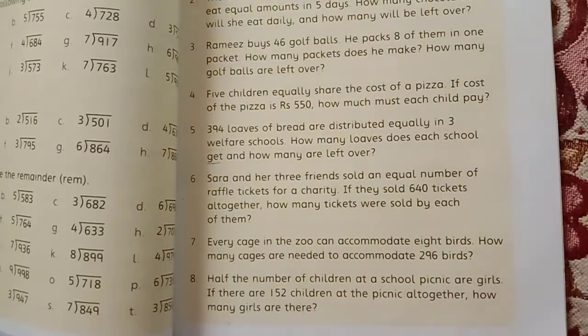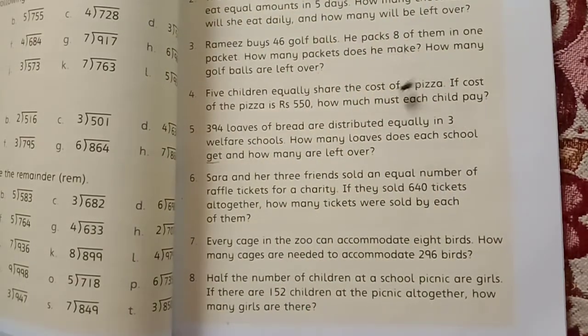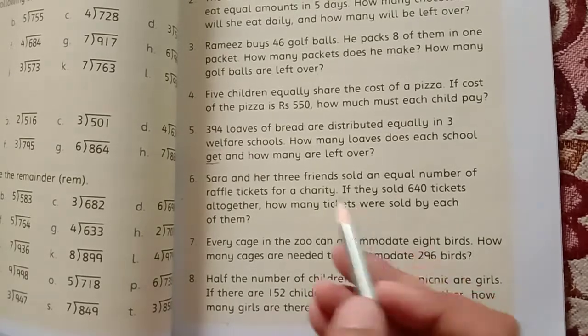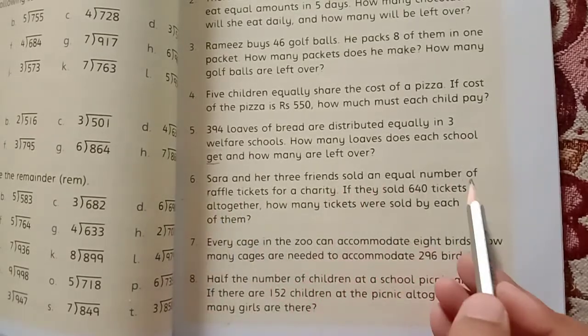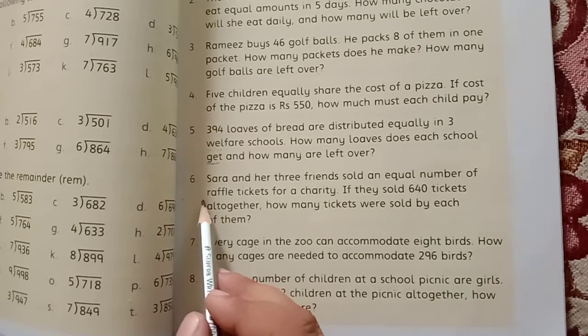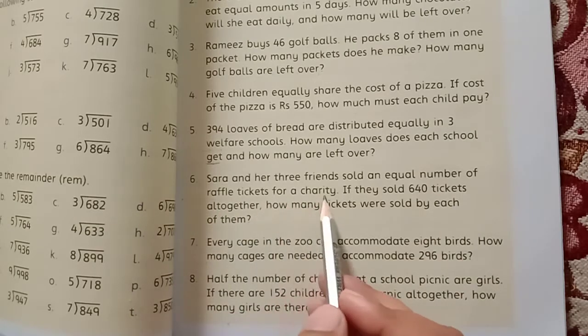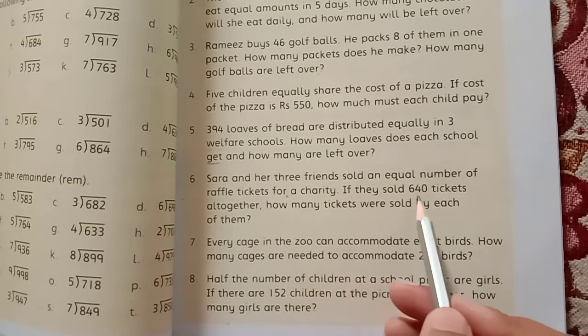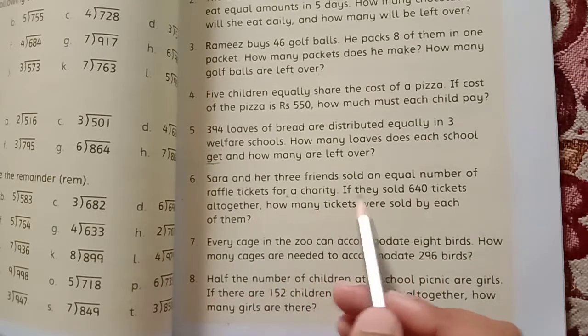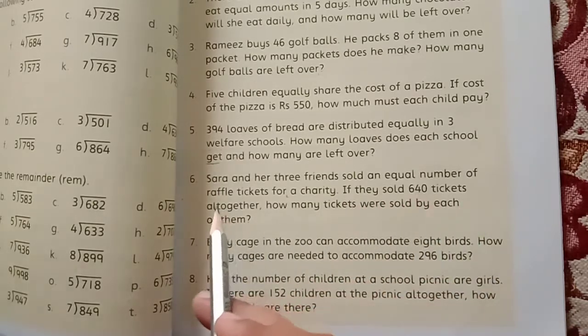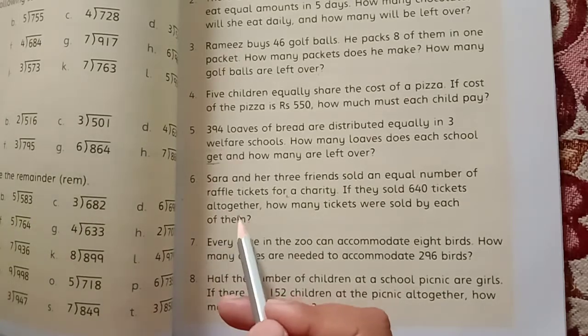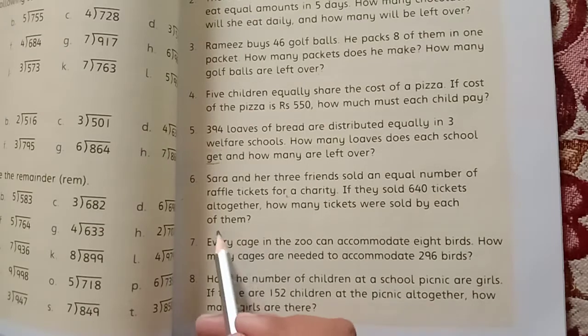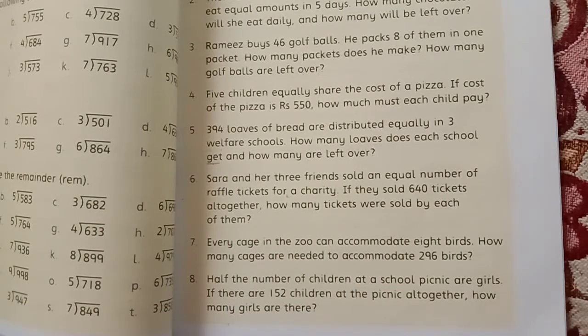Question number 6: Sara and her three friends sold an equal number of raffle tickets for charity. They sold 640 tickets altogether. If they sold 640 tickets, how many tickets were sold by each of them?